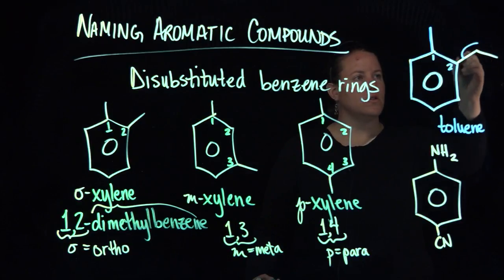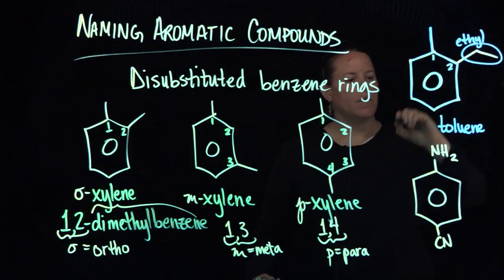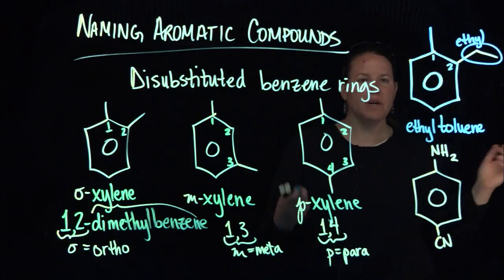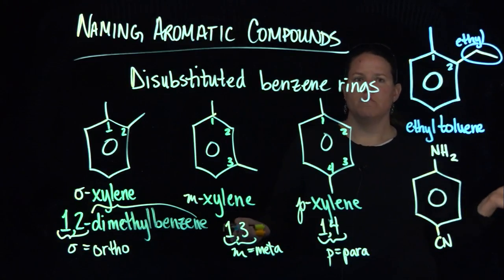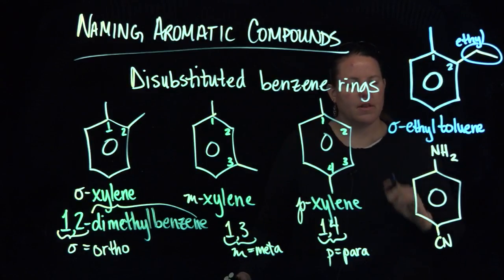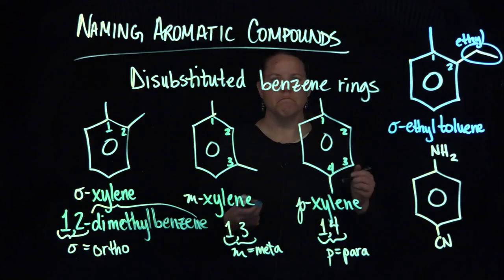And then we have the two-membered group over here, that's an ethyl. So this would be known as ethyl toluene, but because it's 1, 2, we could put 1, 2-ethyl toluene, but because we're organic chemists, we decided to call it something different. That would be ortho-ethyl toluene.